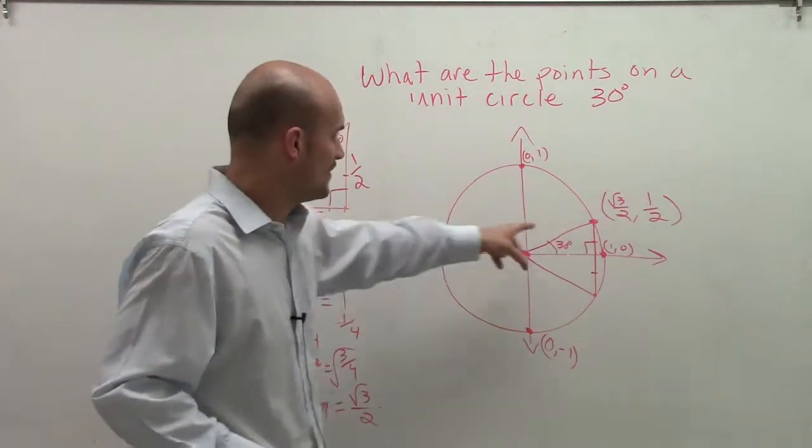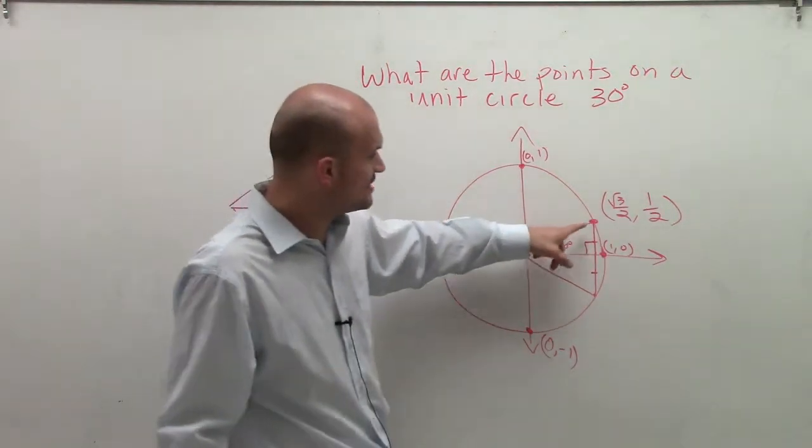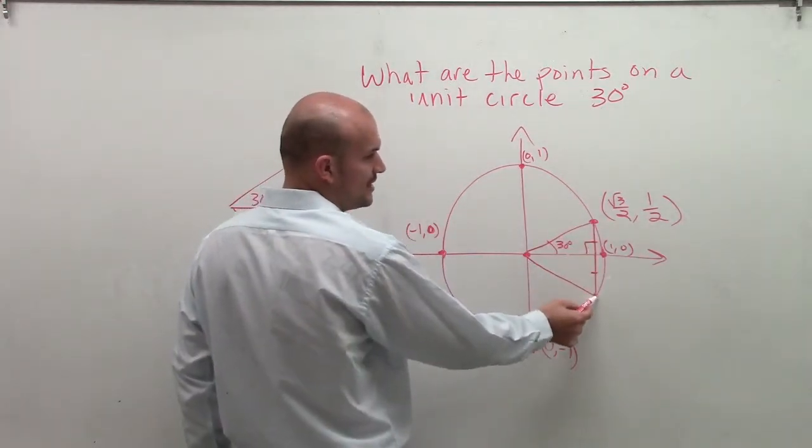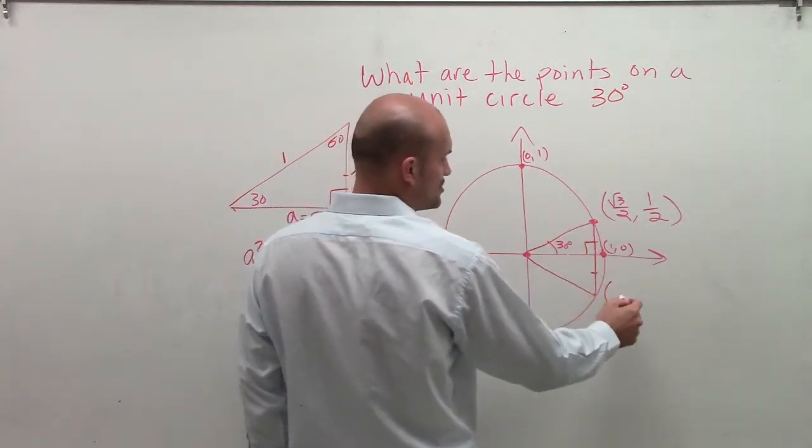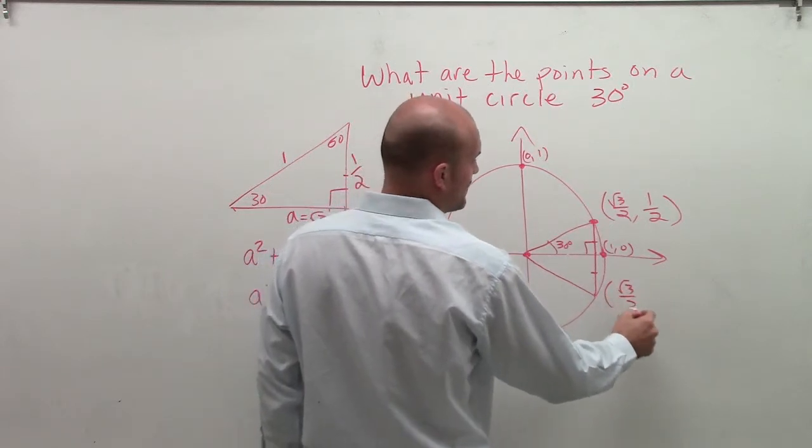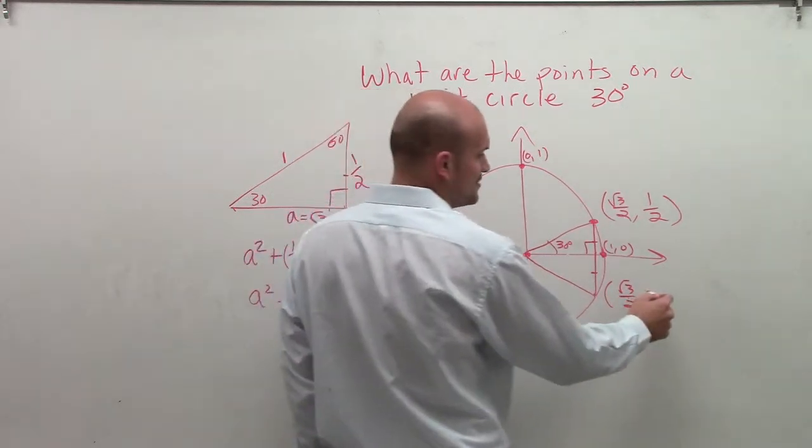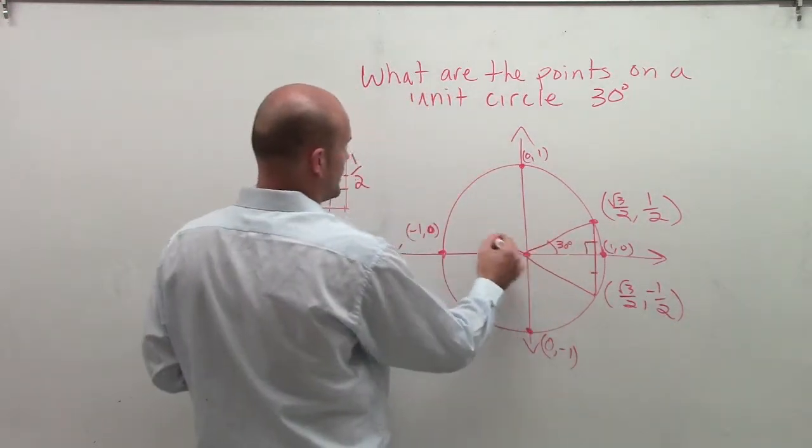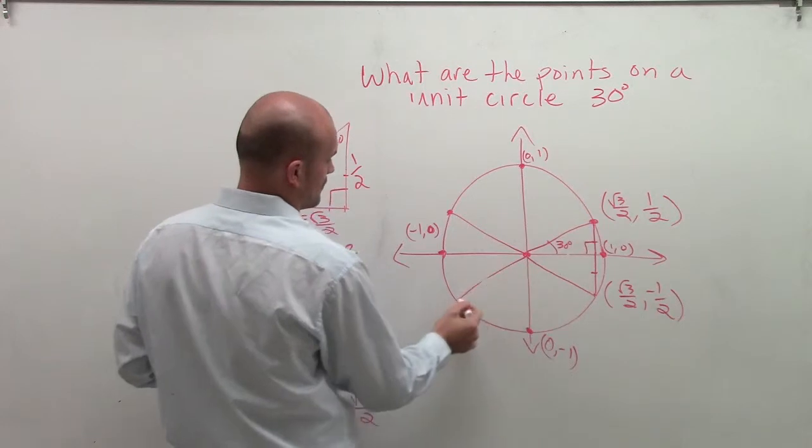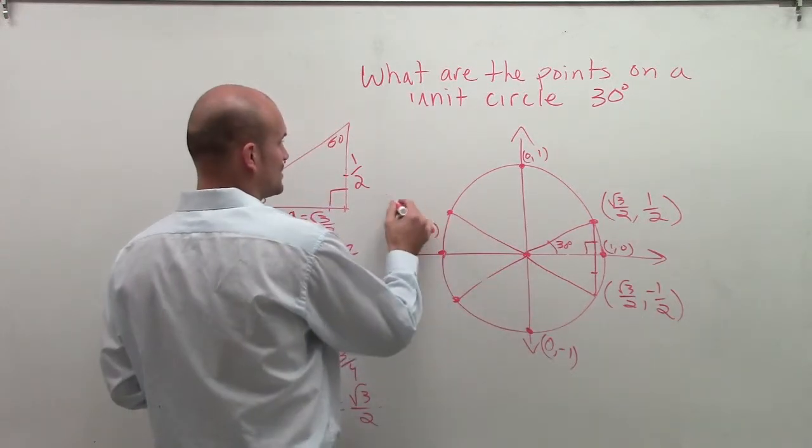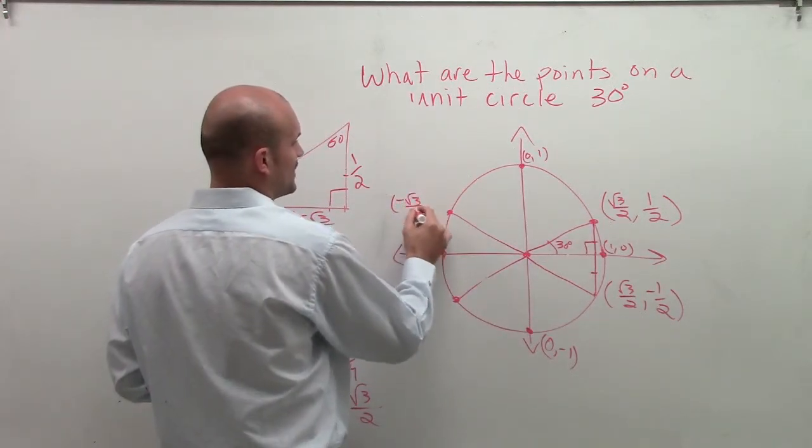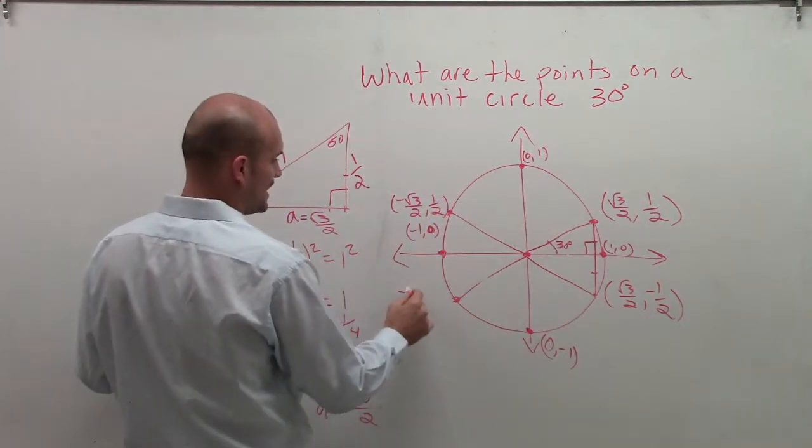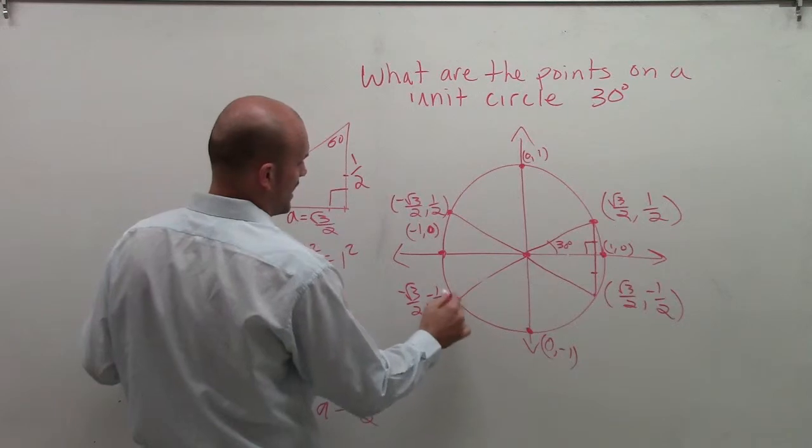Now, that's one point for 30 degrees. What we notice is this point is reflected all about this unit circle. You can already see we have a reflection down here. Now, this reflection is going to be square root of 3 divided by 2. But now my y-coordinate has to be negative. And then you can see there's a direct reflection over here as well. So now these points are going to be negative square root of 3 over 2 comma 1 half. And this point is going to be negative square root of 3 divided by 2 comma negative 1 half.